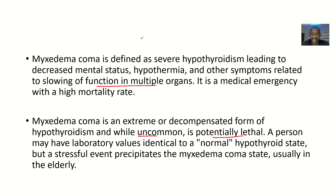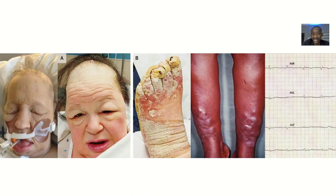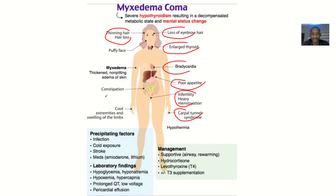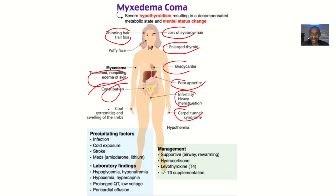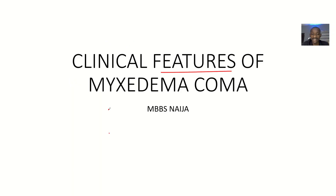Can you see how this patient is losing hair? Can you see the eyebrows — everything is lost? That's what we just spoke about. There will be non-pitting edema of the skin, as we mentioned. There will also be constipation — as you're having poor appetite, the little you eat, you're still constipated. So these are the clinical features of myxedema coma.